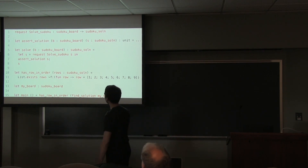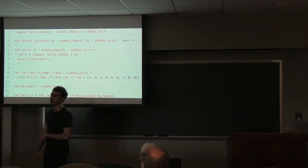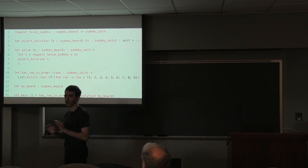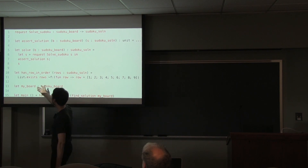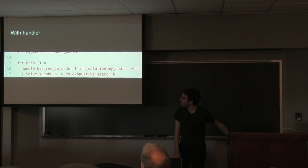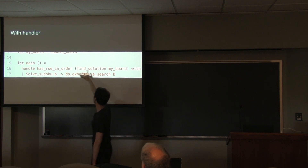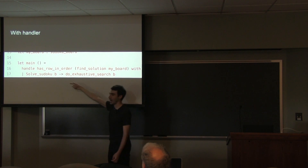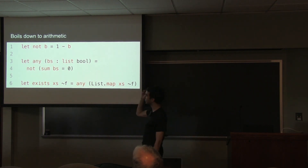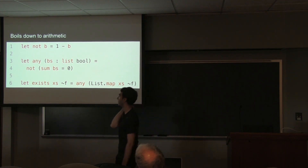Let me show you how this boils down to making arithmetic assertions at the end of the day. Let's see how to code this 'exists' function. 'exists x is f' — are any of the booleans you get by mapping f over x true? How do you implement 'any'? The way you encode booleans in this world — at the end of the day, everything is encoded as field elements. Booleans are basically just field elements constrained to be either 0 or 1.